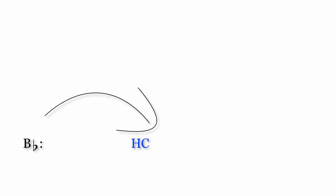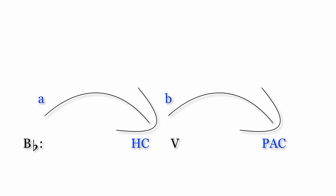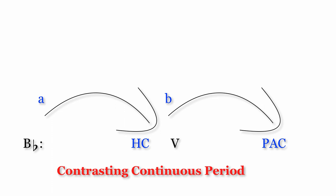In this example, the first phrase ends on a tonicized half cadence in B-flat major. The second phrase begins with new melodic material over dominant harmony, and ends with a PAC in the home key. Because the second phrase begins with new material over a non-tonic chord, this is an example of a contrasting continuous period.